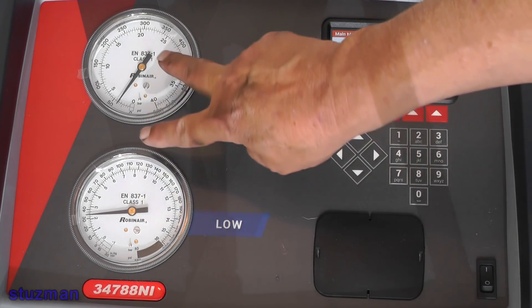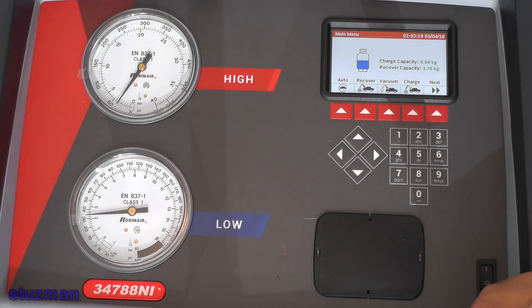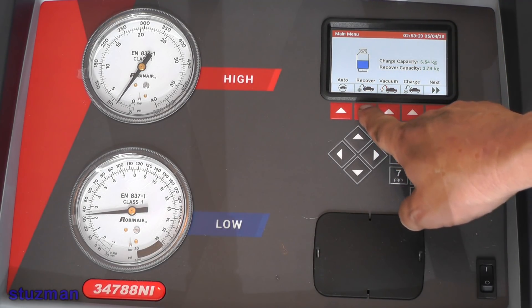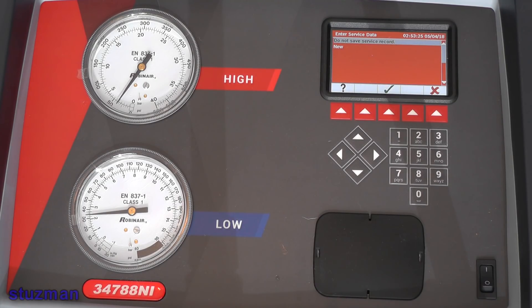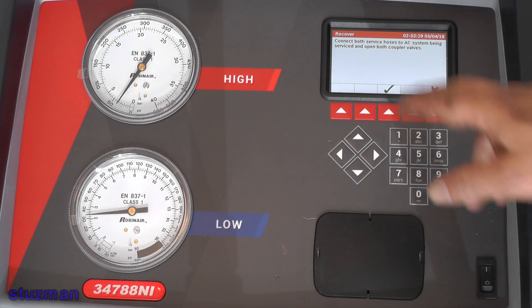As you can see, we have some pressure inside the system. Let's go ahead and recover this refrigerant out of this truck here. I'm not sure how well you can see this, but I'm going to do the recover. I don't want to save a record, so I'm going to hit the check mark. Now it's asked me to make sure both valves are connected and that they are open.